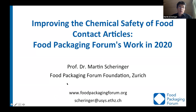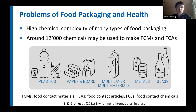The work of the FPF is driven by a problem we can describe as the high chemical complexity of many types of food packaging. This high complexity causes many challenges and is one of the main drivers of what the FPF wants to do. There are around 12,000 chemicals that have been listed as ingredients or as materials that may be used to make food contact materials (FCMs) and food contact articles (FCAs), as shown here in these different types of food packaging.